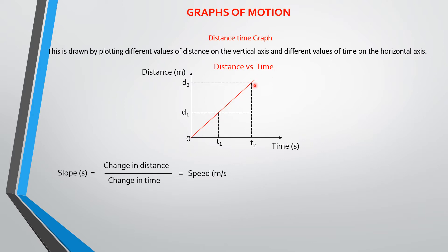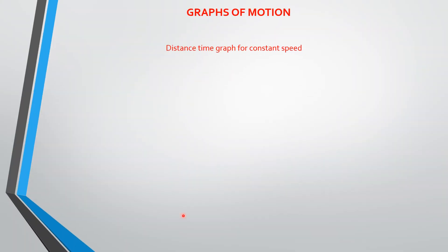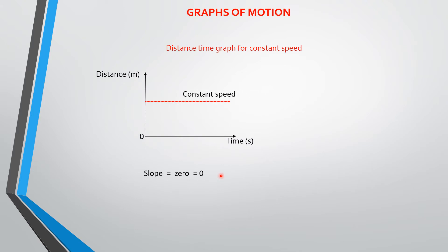The slope is D2 minus D1 over the difference in time, and that gives you the speed of the particle. For a constant speed, the distance is not changing, so the slope equals zero and the speed is zero. This is another type of distance-time graph you get from motion.